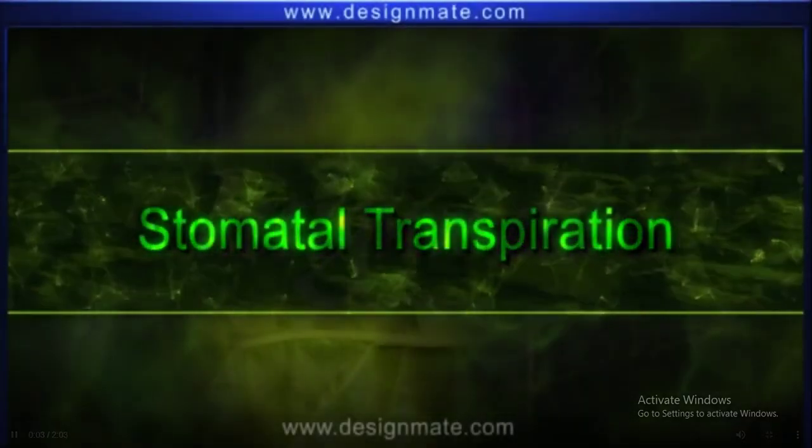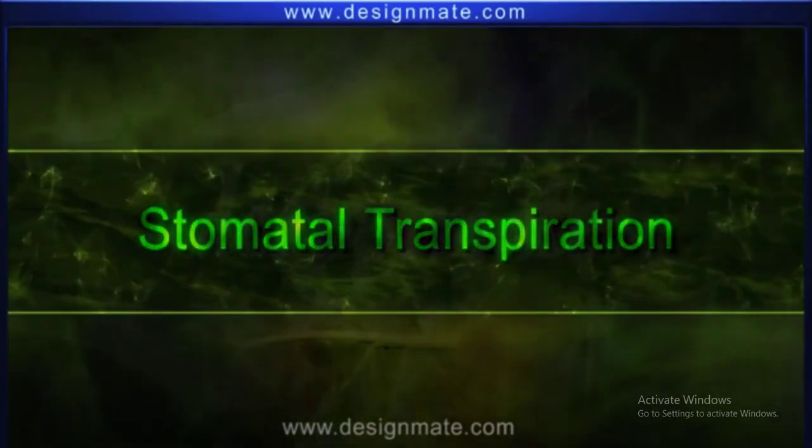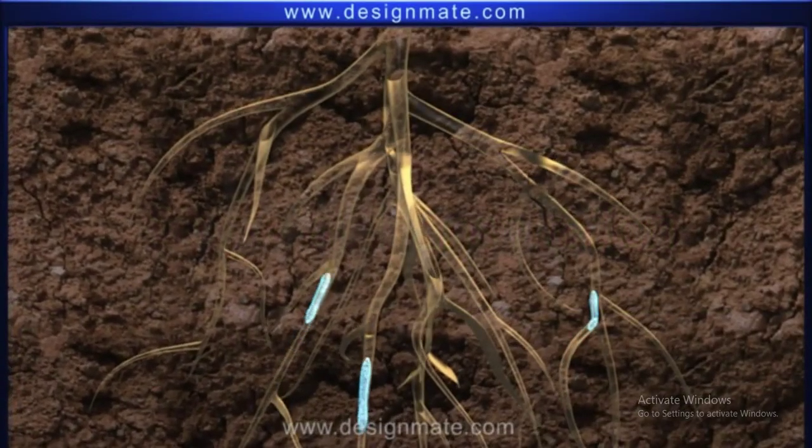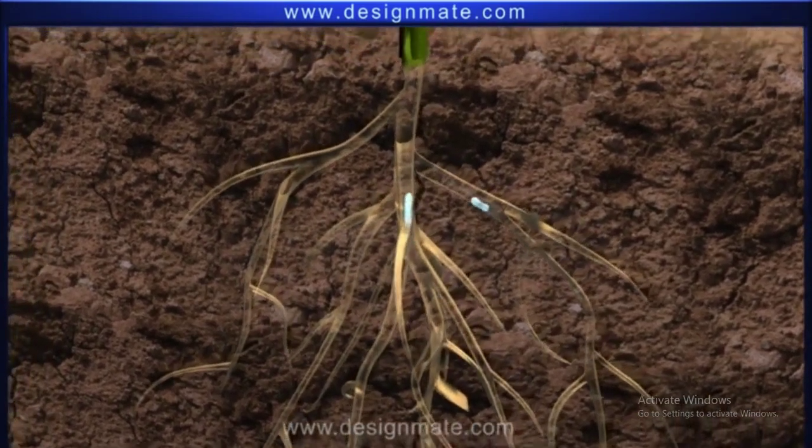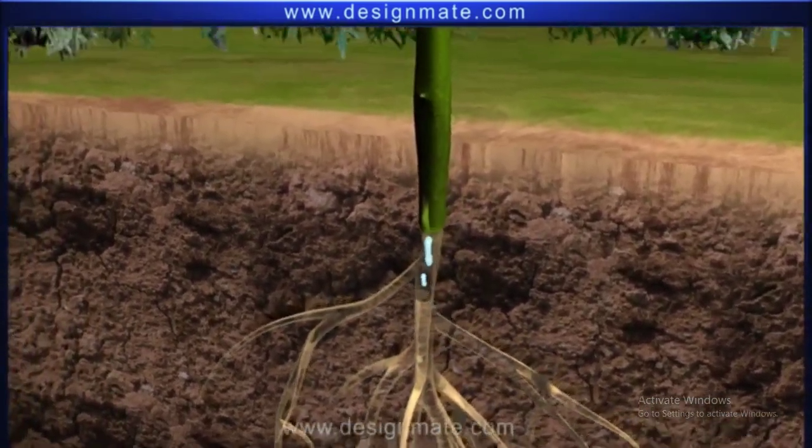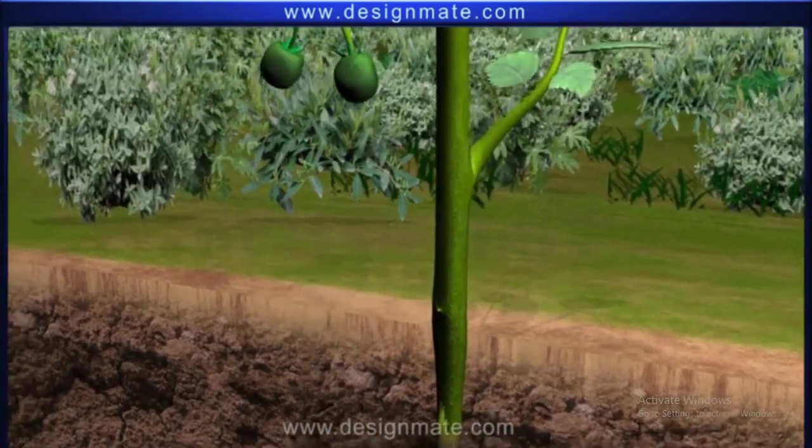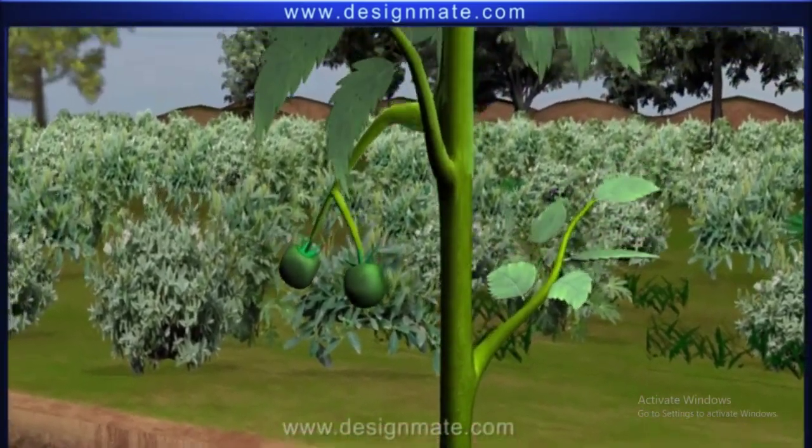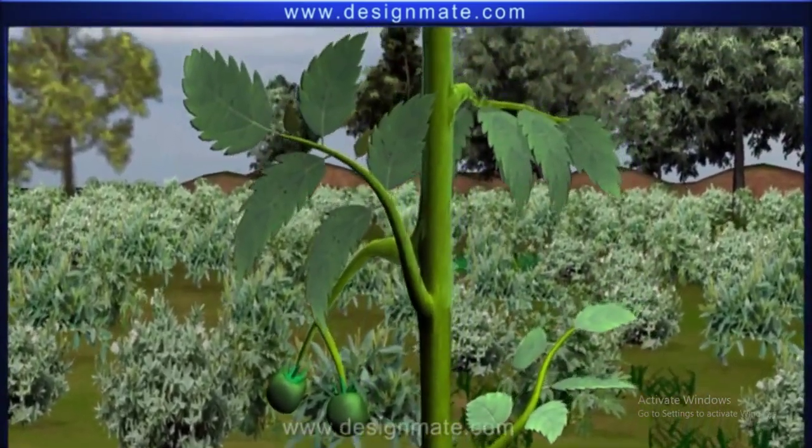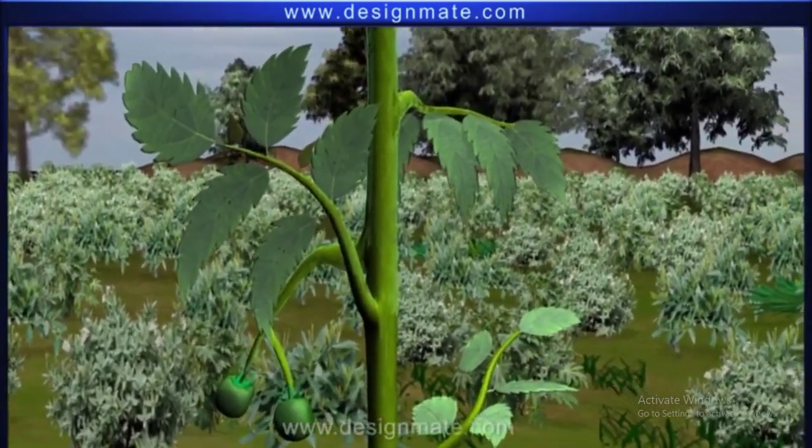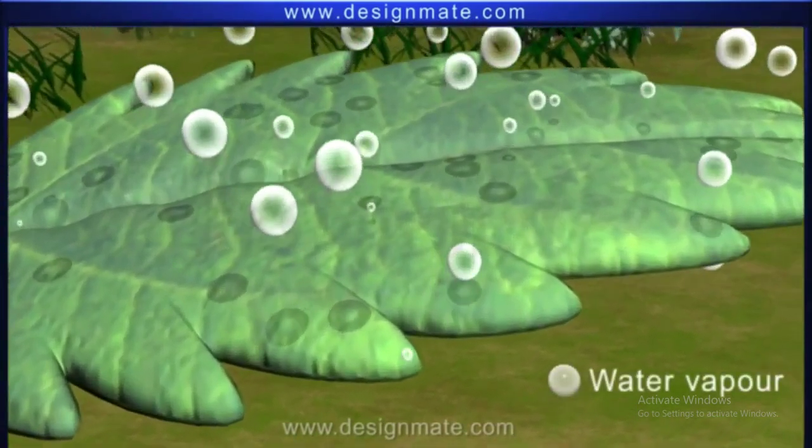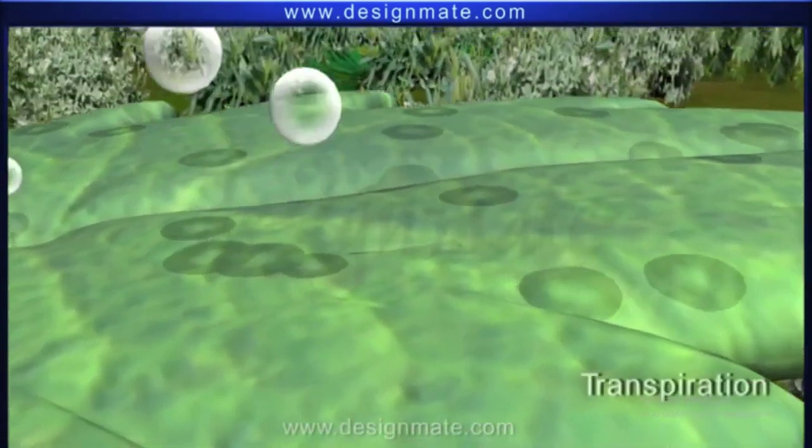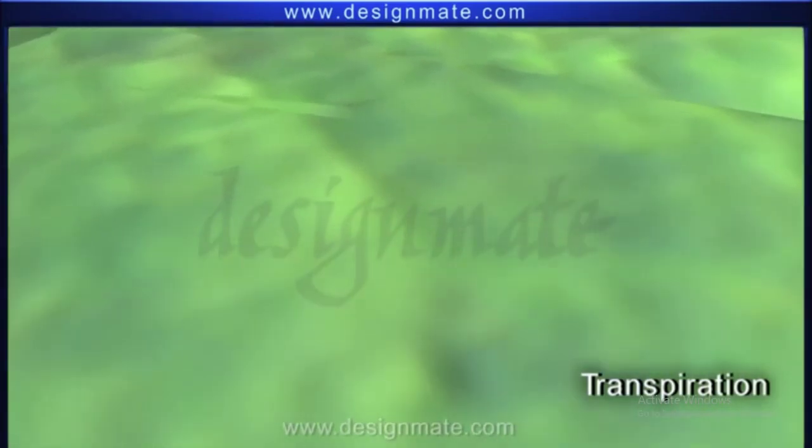Stomatal transpiration. Plants absorb large amounts of water from soil. A fraction of it is utilized while the rest is lost in the form of water vapor by the process of transpiration, mainly through stomata.